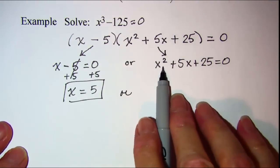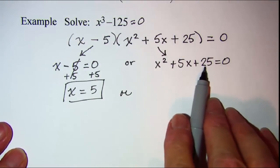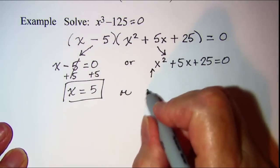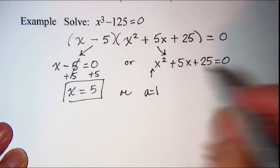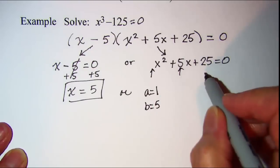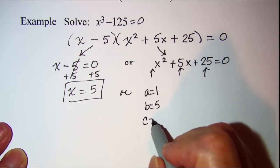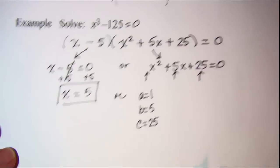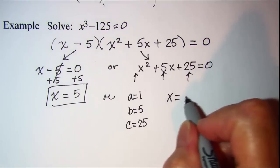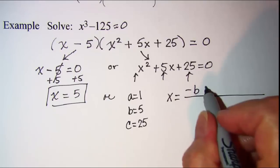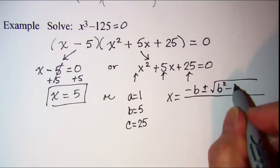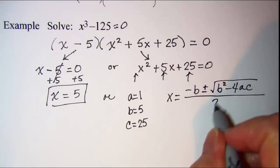For the trinomial, we'll need to use the quadratic formula since it doesn't factor. We can see that a equals 1, b equals 5, and c equals 25. The quadratic formula is x equals negative b plus or minus the square root of b² minus 4ac, all over 2a.